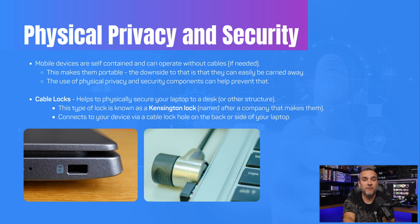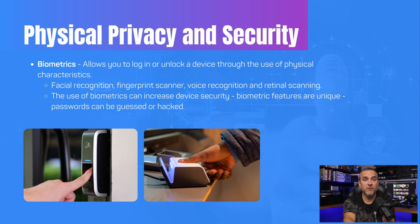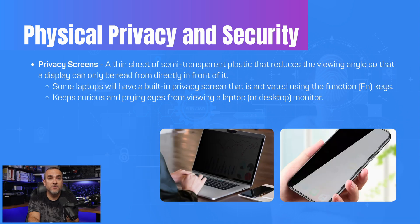Mobile devices are self-contained and can function without cables, making them portable, but this also means they can be easily stolen. To address this, physical privacy and security components can be used to prevent theft. Cable locks such as the Kensington lock can securely attach your laptop to a desk or fixed structure via the cable lock hole on the device. Biometrics technology enables users to access their devices using physical characteristics such as facial recognition, fingerprint scanning, voice recognition, and retinal scanning, improving security because biometric features are distinct and cannot easily be guessed or hacked unlike passwords. Privacy screens are thin sheets of semi-transparent plastic that decrease the viewing angle, allowing a display to be read only from directly in front — some laptops have built-in privacy screens activated via function keys.